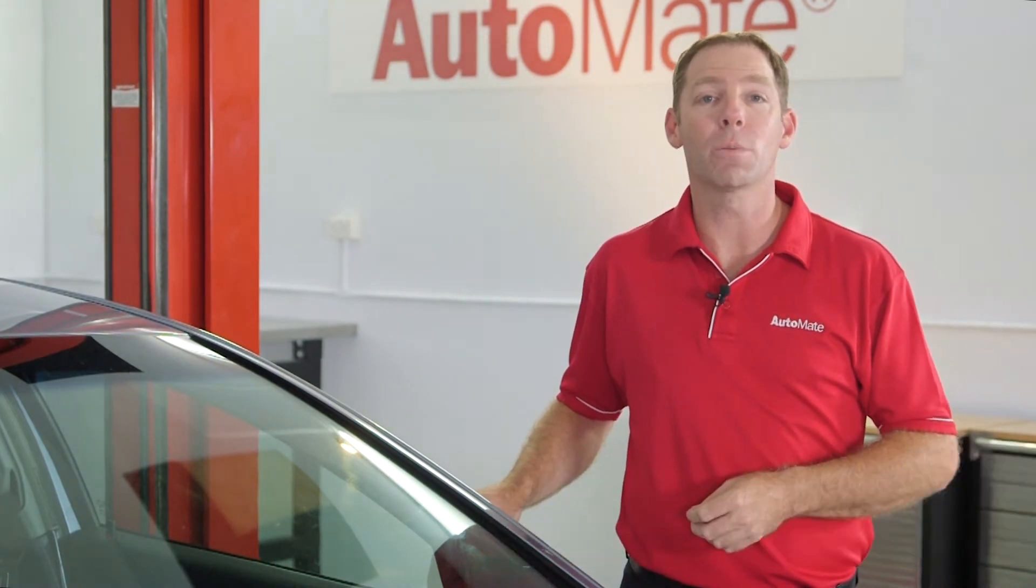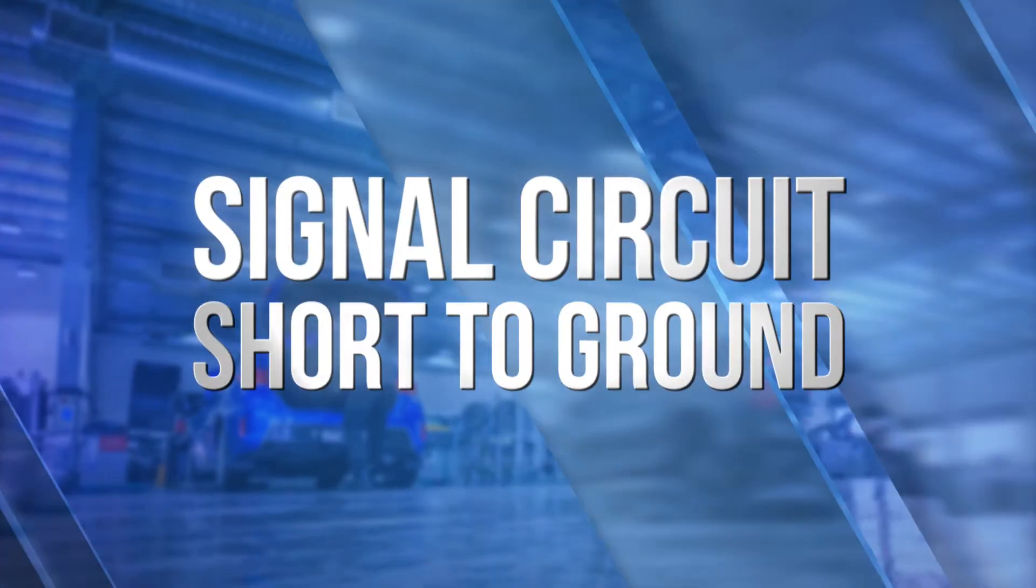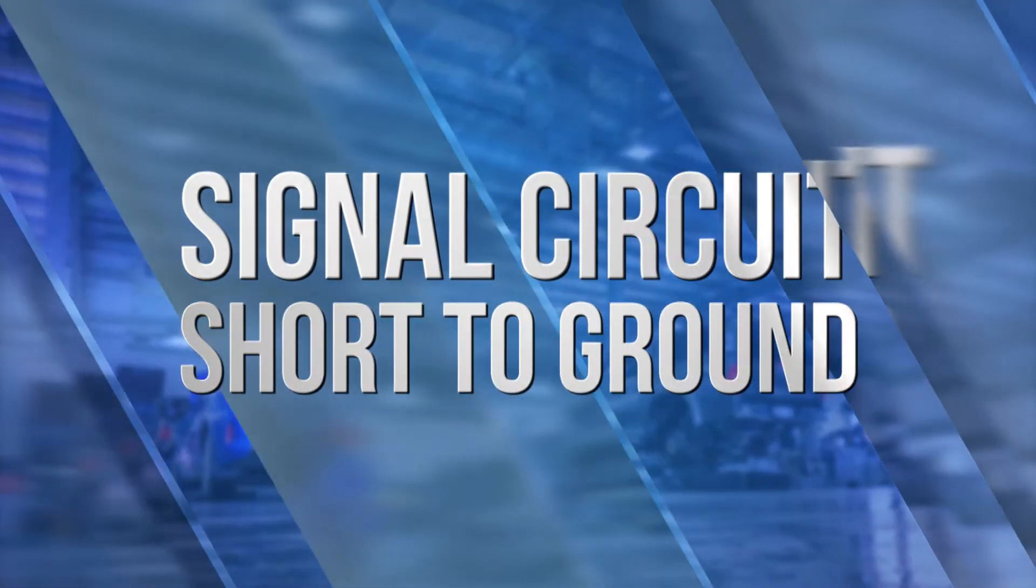The ambient light or sun load sensor provides information about the sun's heat intensity, elevation, and azimuth. It was once only found on higher-end vehicles, now we're seeing them across all models. Hi, I'm Clint, welcome to AutoMate. Let's start by checking for a short to ground in the signal circuits.